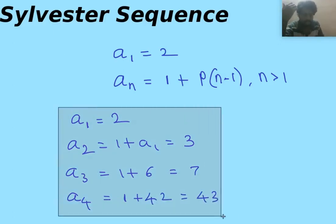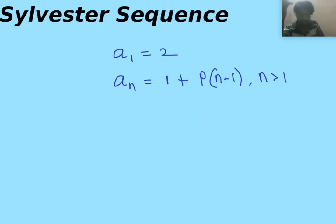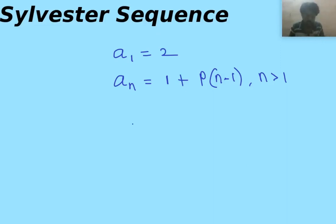As you can see, this sequence is increasing very rapidly. It is easy to observe that as n tends to infinity, a_n also tends to infinity. So in this video we are going to prove a result based on this sequence.